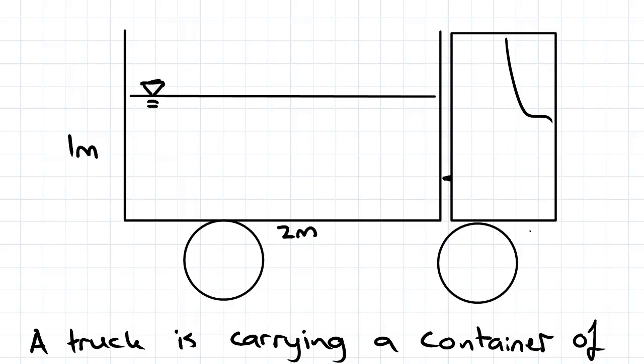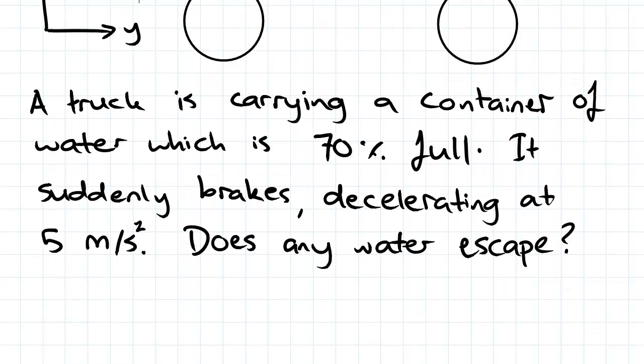If we go back to our example and draw in our axes - that will be our y-axis, up will be our z-axis - in our case, because the truck is only moving along the y direction, az is equal to zero.